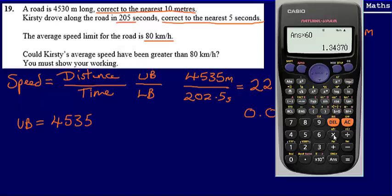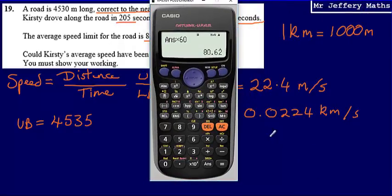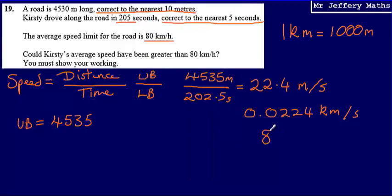That is 1.34 kilometres per minute. And then if I multiply that by 60 again, this will tell me how many kilometres are covered per hour. So my answer to this is 80.62 recurring. I've got a speed here of 80.62 recurring kilometres per hour.